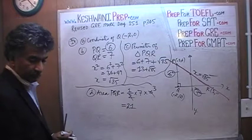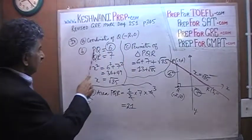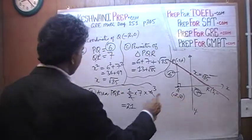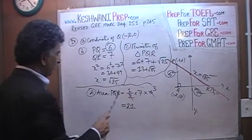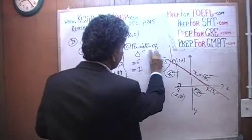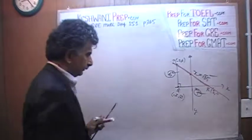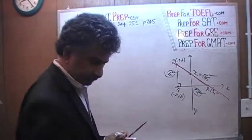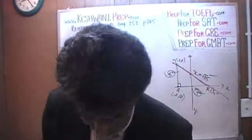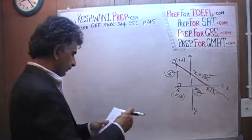So for part A, the answer was the coordinates of Q are negative 2 and 0. For part B, PQ is 6, QR is 7, P to R is root 85. In C, the perimeter is 13 plus root 85. In D, the area of the triangle is 21. So this is part E that we are dealing with. The very first thing they want is a slope.